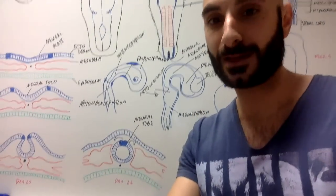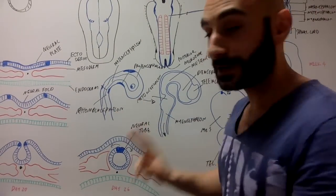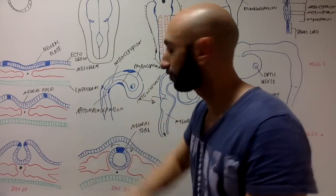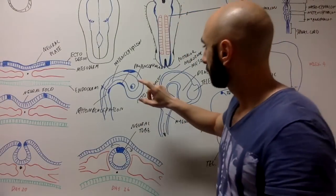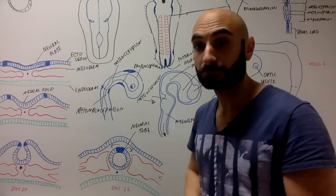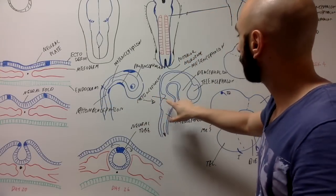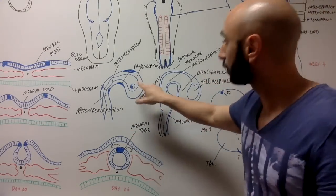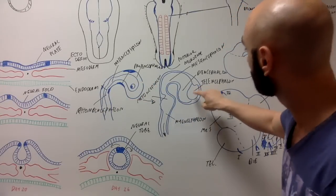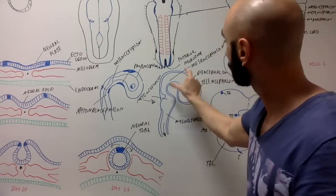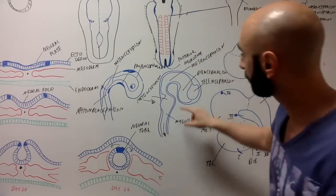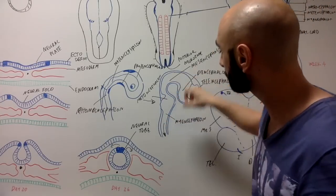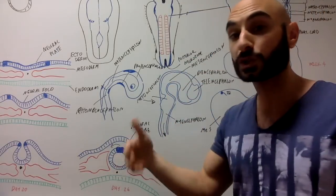Let's go through it again from another angle. Early on we have three sections: prosencephalon, mesencephalon, rhombencephalon — forebrain, midbrain, hindbrain. As time goes on, they differentiate further: the prosencephalon becomes the telencephalon and diencephalon; the mesencephalon remains the mesencephalon; and the rhombencephalon becomes the metencephalon and myelencephalon. You can tell from the different dilatations of its development that it will resemble its future adult structure.